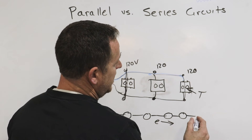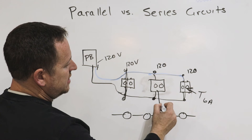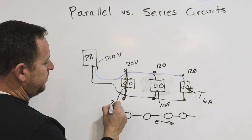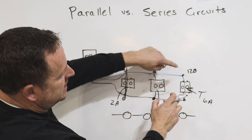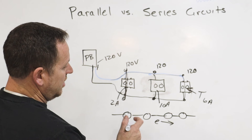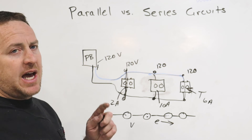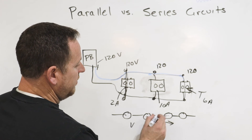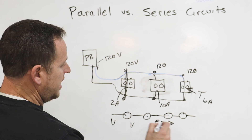Let's say you plug in a toaster and it draws 6 amps, then a vacuum that draws 10 amps, and an alarm clock that draws 2 amps. The flow around the circuit is not the same — the voltage is the same across each outlet, but the amperage each device pulls is different. In a series circuit, like with all your light bulbs, the current is the same but what changes is your voltage — across each one of those lights there's going to be a little voltage drop.